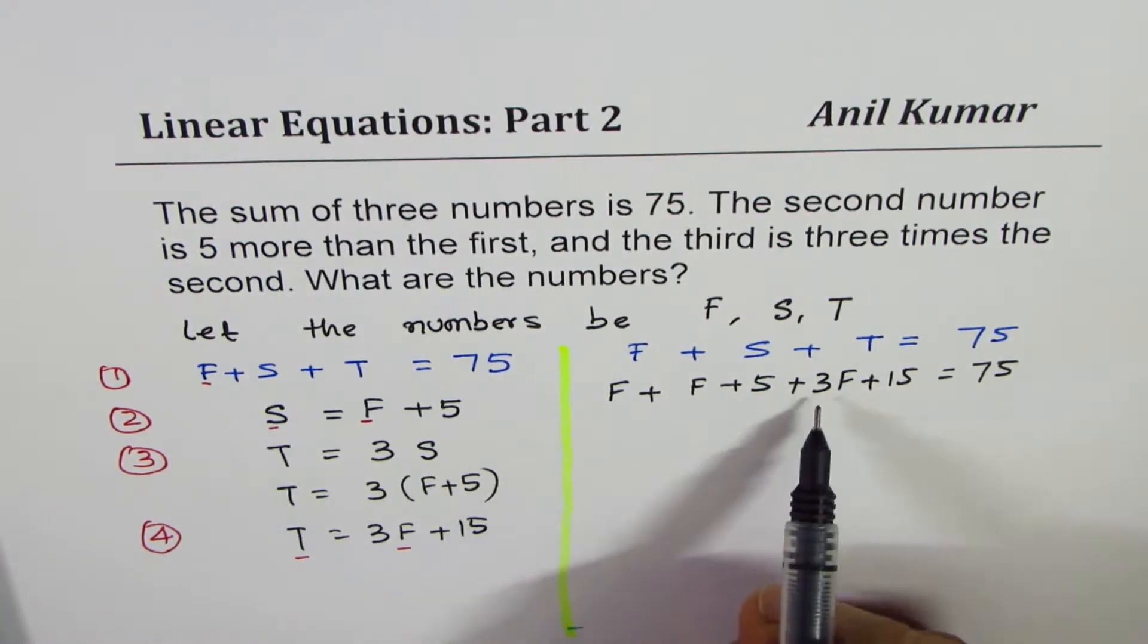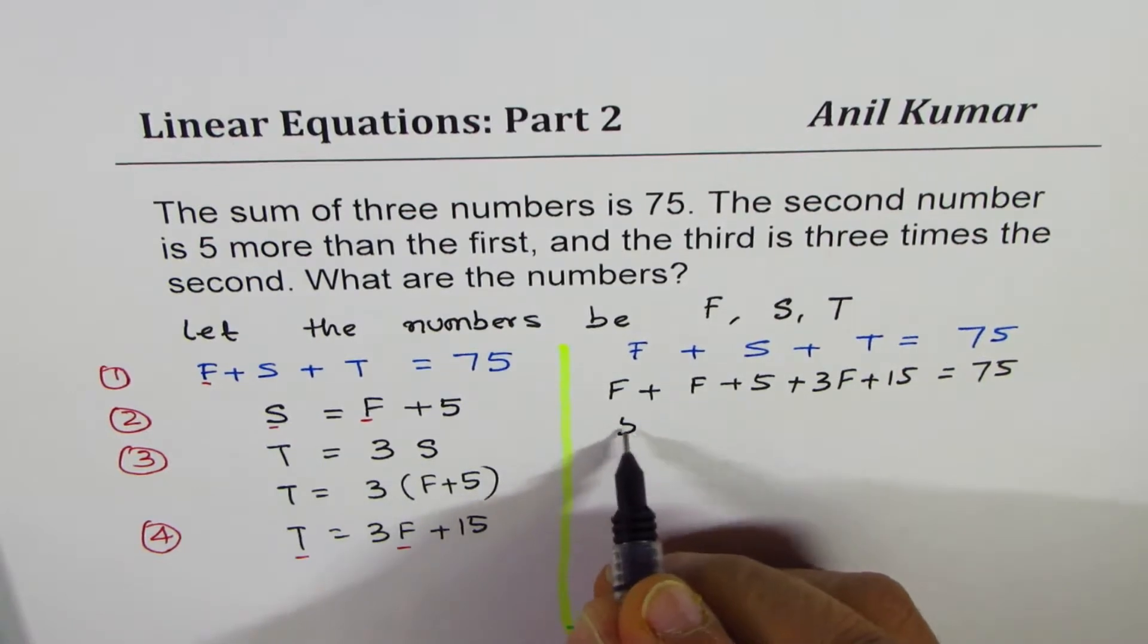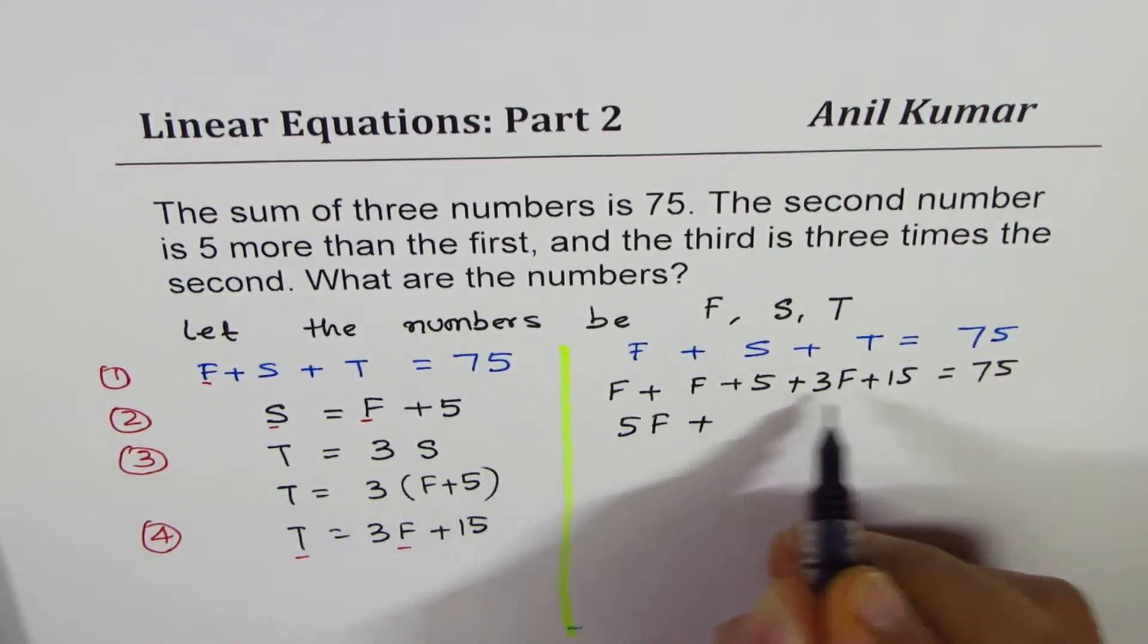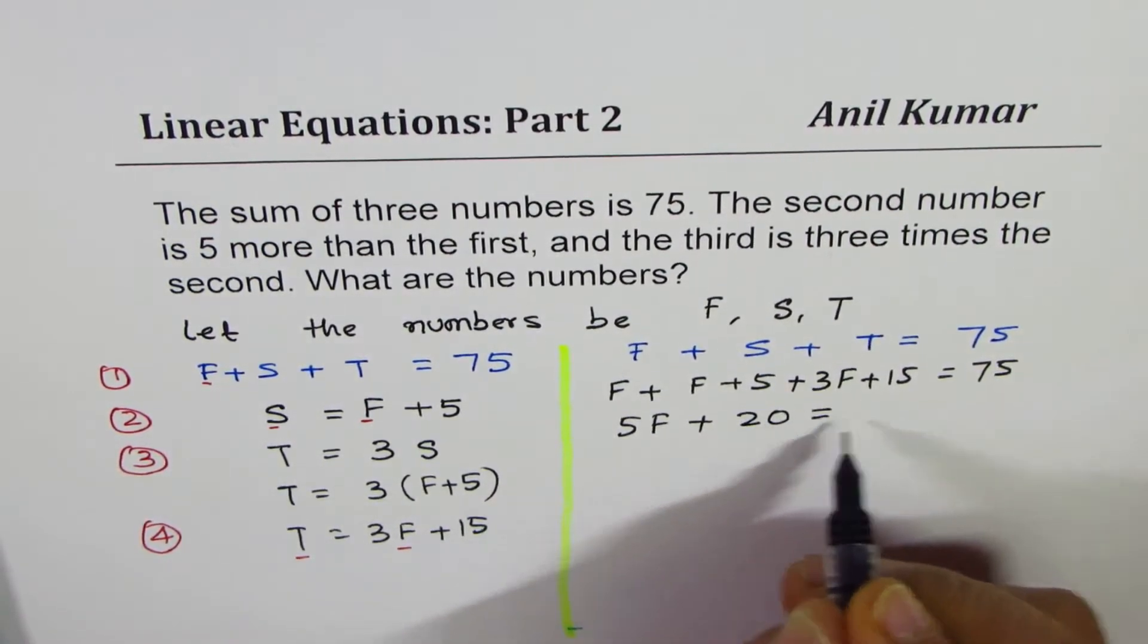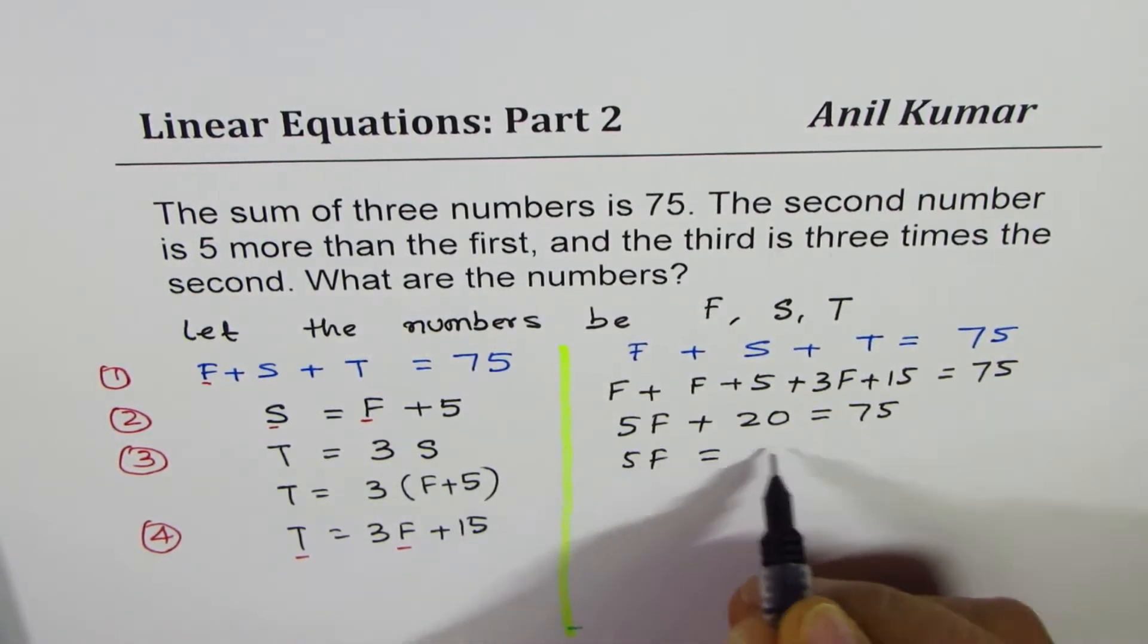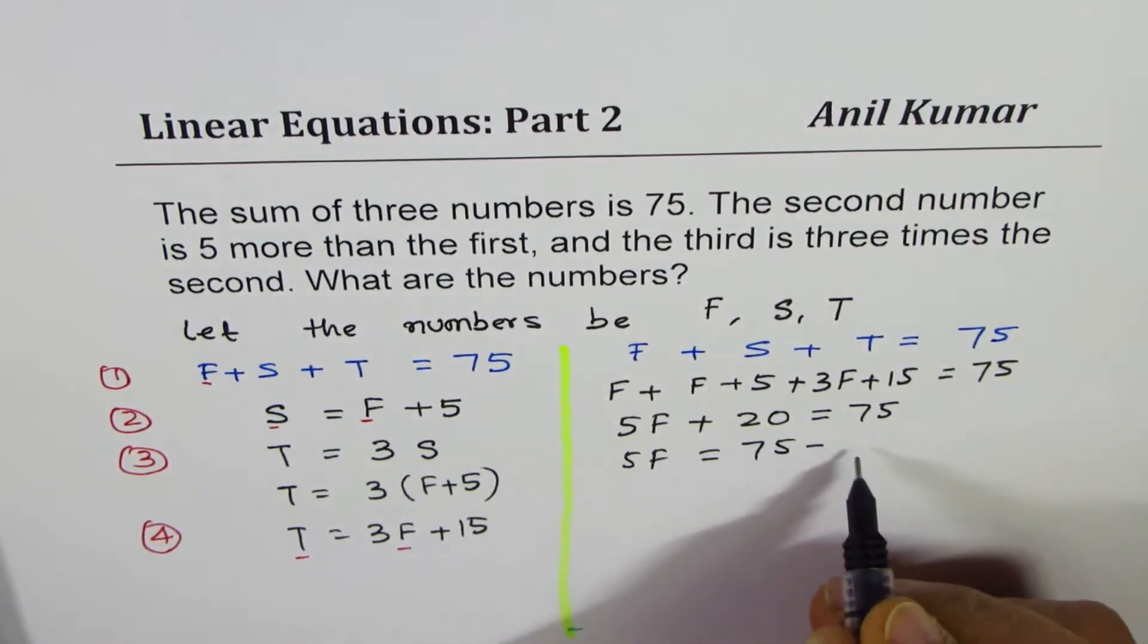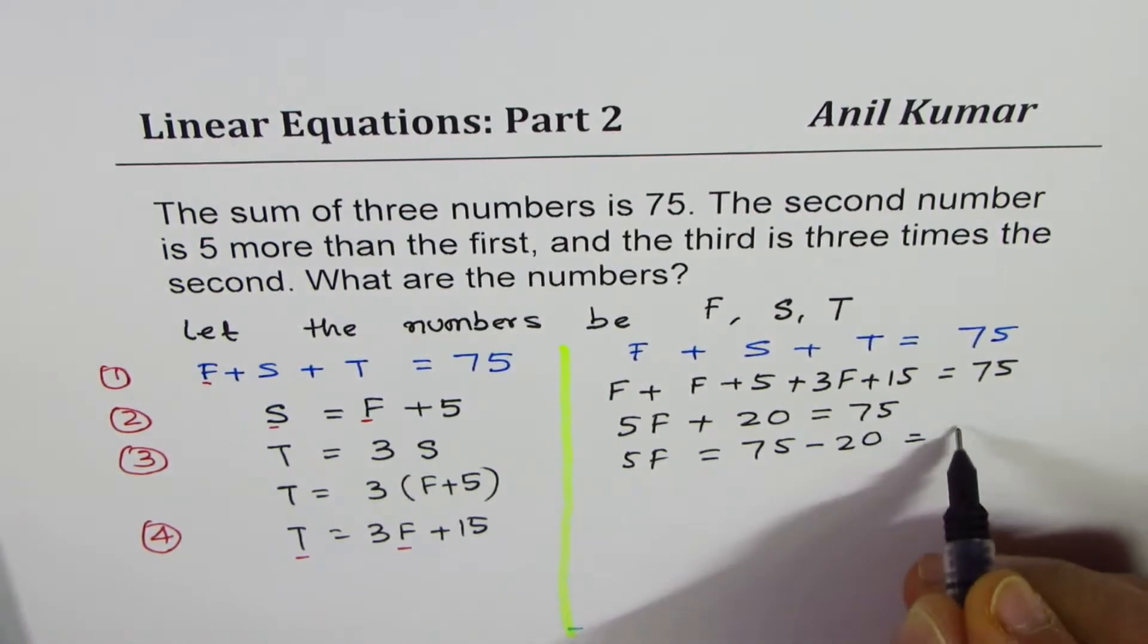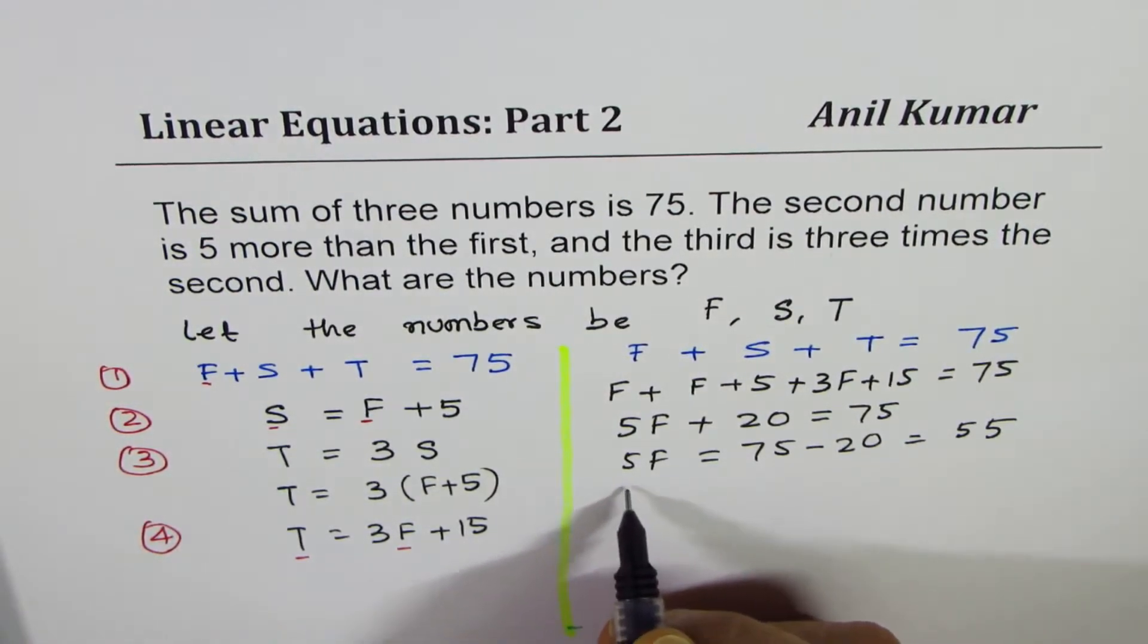We can count the number of F's: 1, 2, and 3 - that's 5 F's. Plus 5 plus 15 is 20. So 5F + 20 = 75.